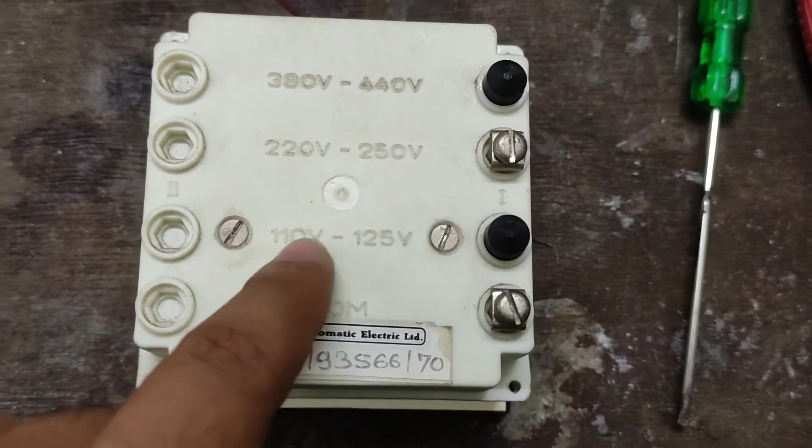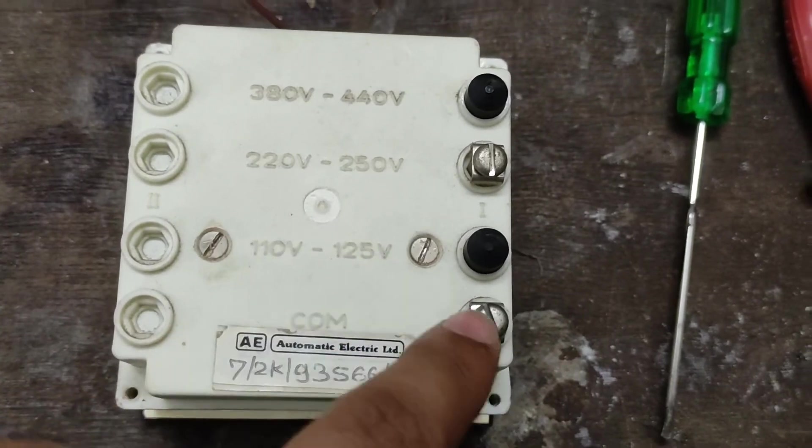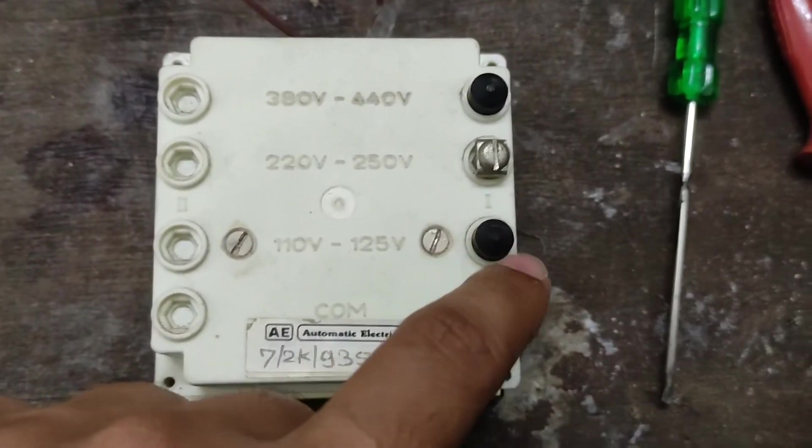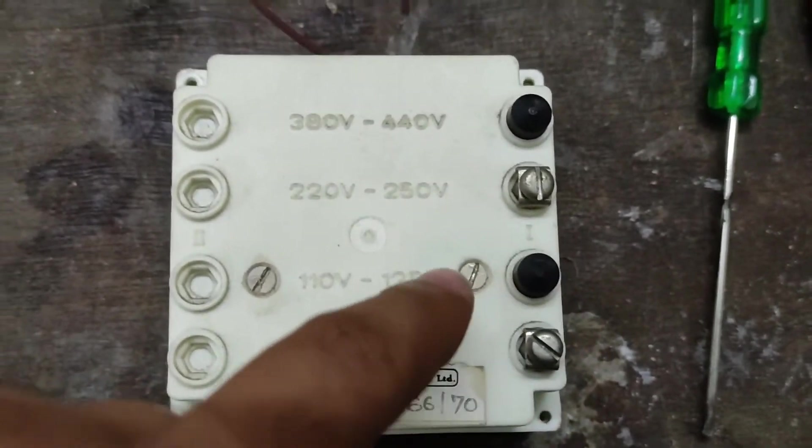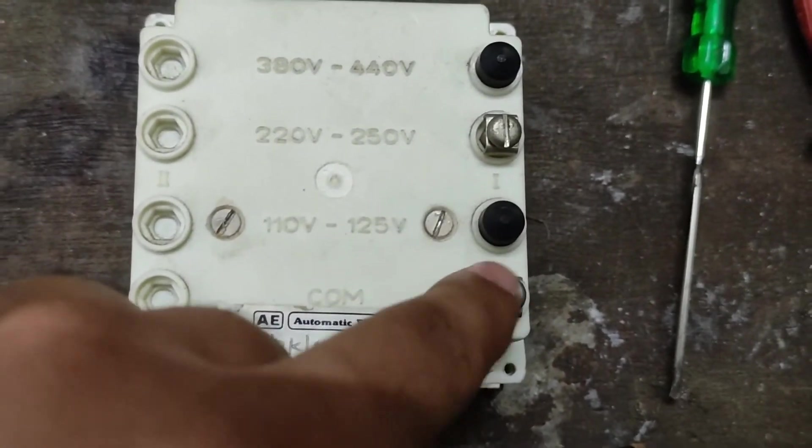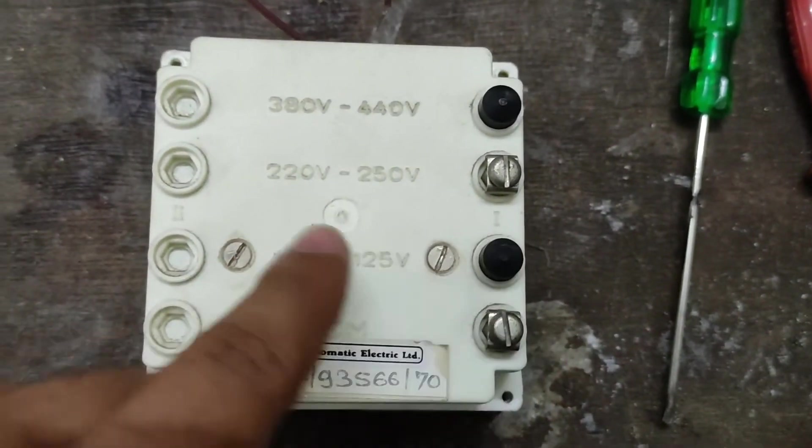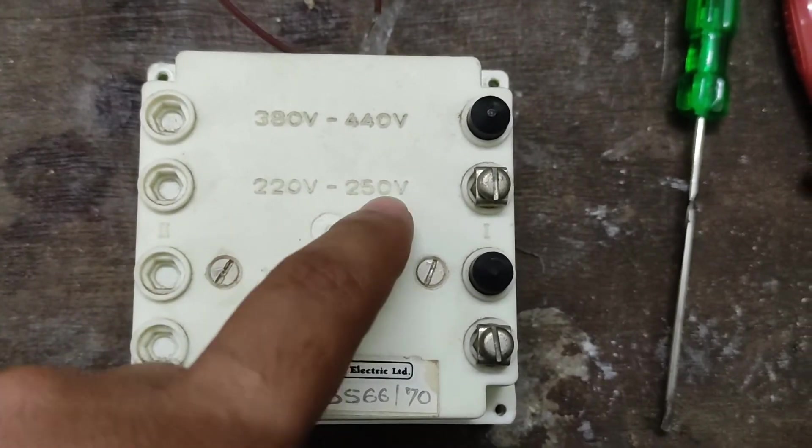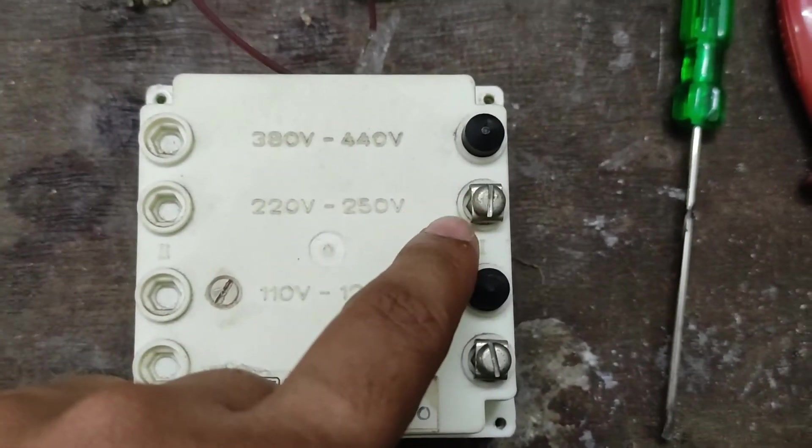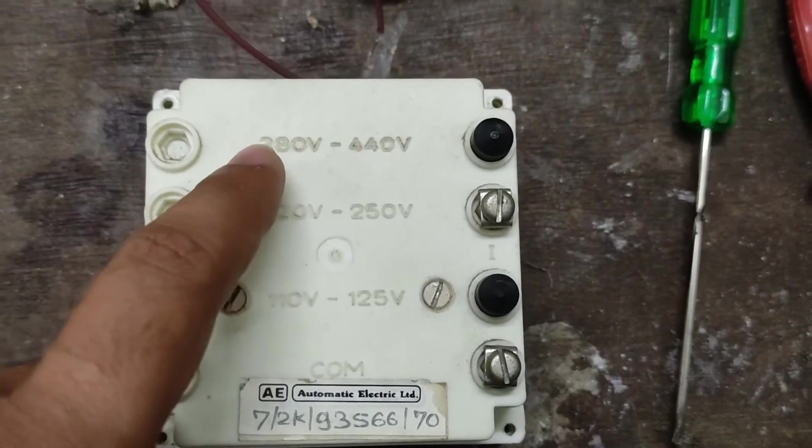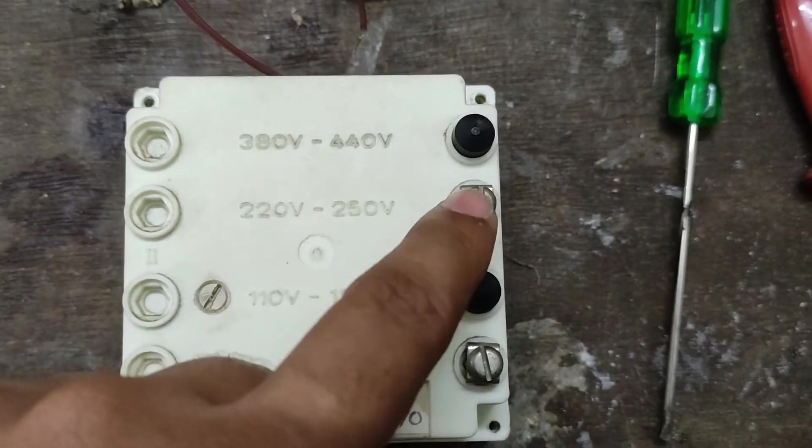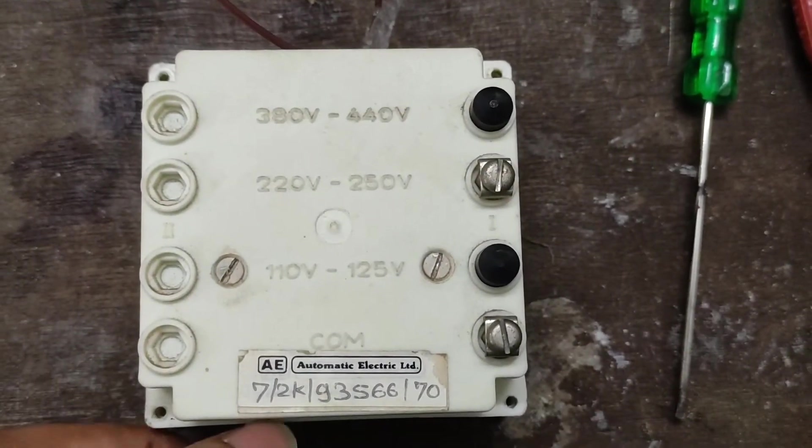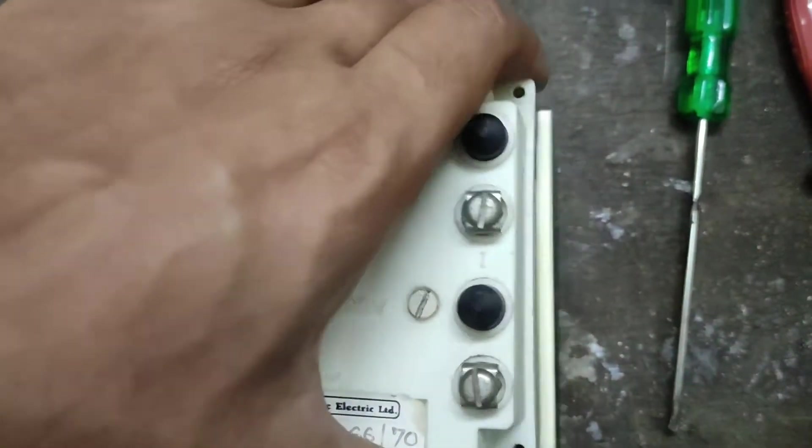This meter can be used at three different voltage levels. This is the common neutral connection. If you're in a country with 110 to 125 volt supply, you connect to this pin covered with the black rubber top. Since we use 220 to 250 volt, we've connected to that point. It can also read 380 to 440 volt AC frequency, the phase-to-phase frequency.